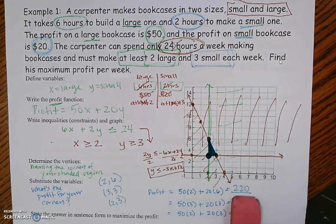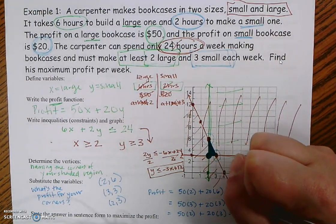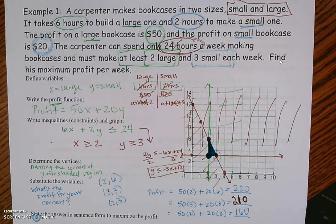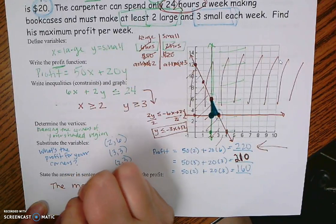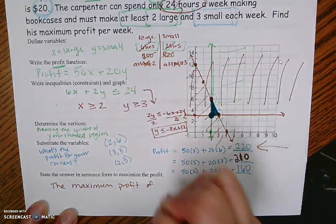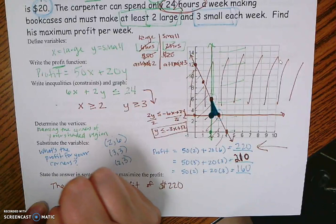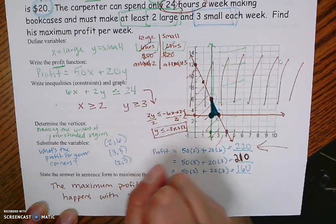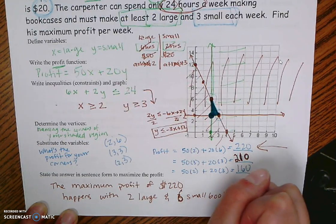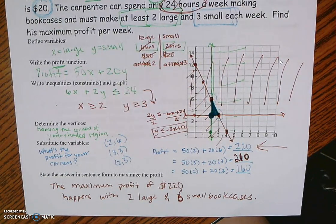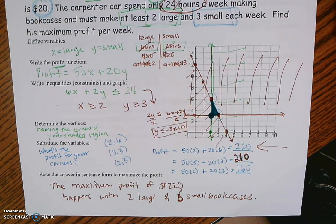Plugging in (2, 6) gives $220. Plugging in (3, 3) gives $210. Plugging in (2, 3) gives $160. So which one maximizes profit? The first one. At the very end, I write a sentence: the maximum profit of $220 happens with two large and six small bookcases. If you don't understand, watch this video again. The second example from yesterday's class can be found in the second video.